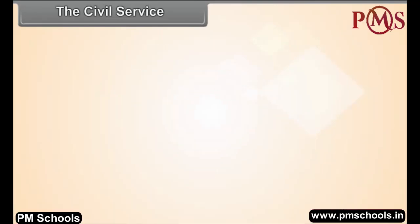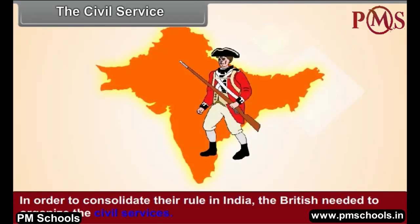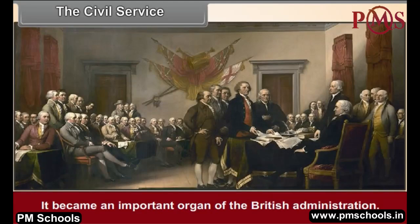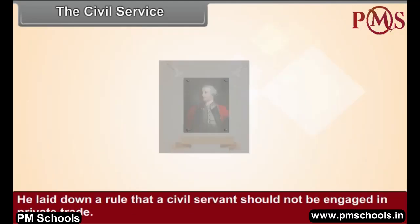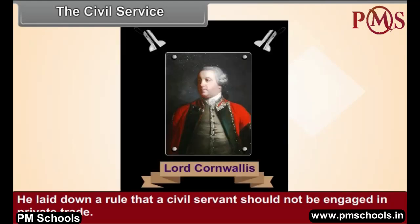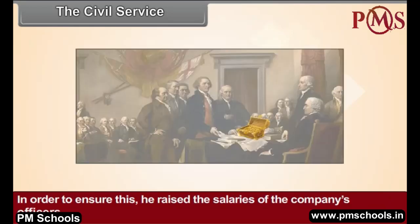In order to consolidate their rule in India, the British needed to organize the civil services. Lord Cornwallis organized the civil service system, making it an important organ of British administration. He laid down a rule that a civil servant should not be engaged in private trade, and to ensure this, he raised the salaries of the company's officers.